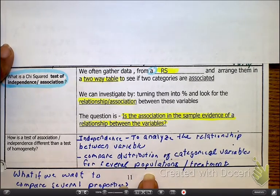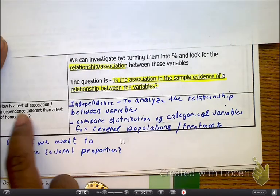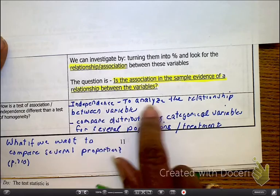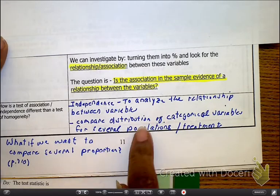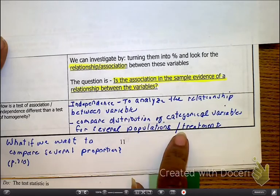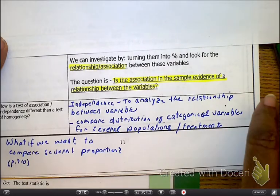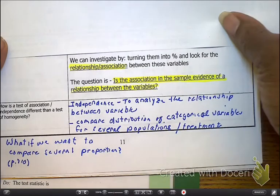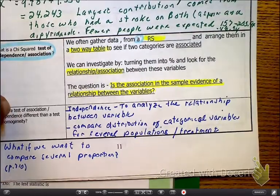Okay. How we test that is here, we're testing for an association. How is the difference? We're analyzing the relationship between the variables. We're comparing a categorical variable for several populations of a treatment versus a treatment. So, but we're doing one random sample. That's the way I see it. But let's see as we do other things.